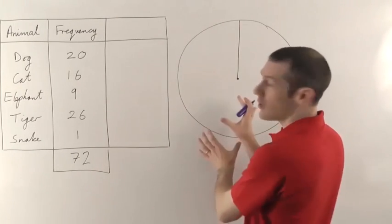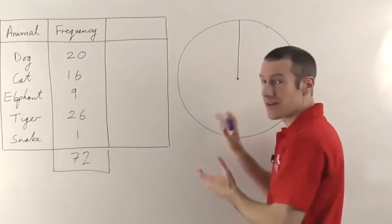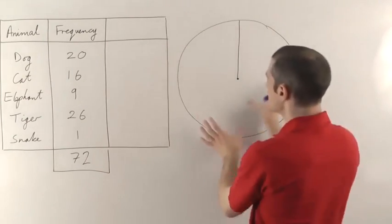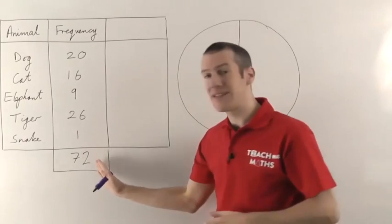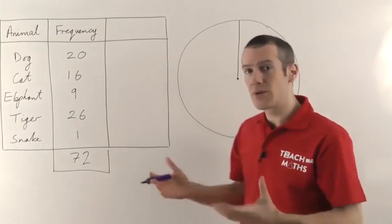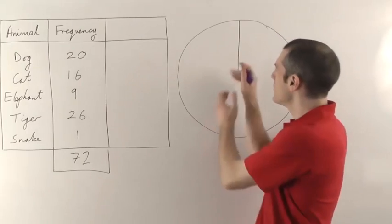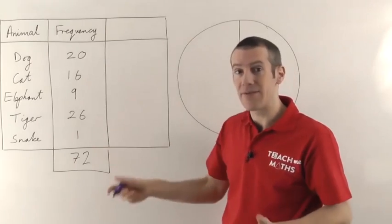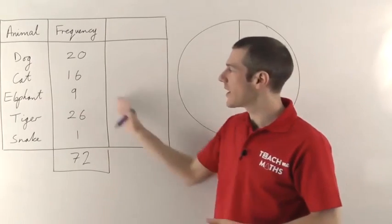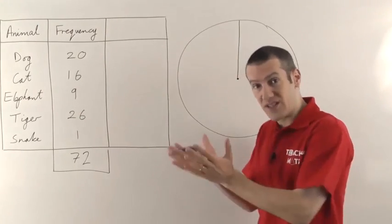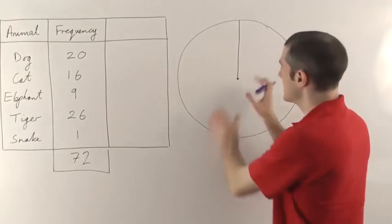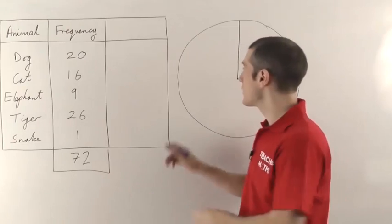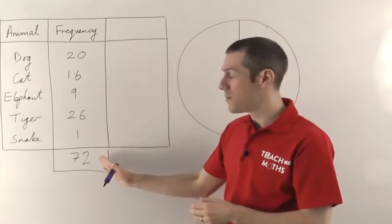The total angle in the whole circle, well the total angle of the whole circle is always 360 degrees. So you've got 360 degrees that you need to share out amongst 72 people. The critical thing we need to work out here is how much of an angle, how many degrees would each person in here represent. Once we know that we can work out how big each of the different wedges need to be. So in this case if I've got 360 degrees and 72 people, I want to divide the 360 degrees by the 72.